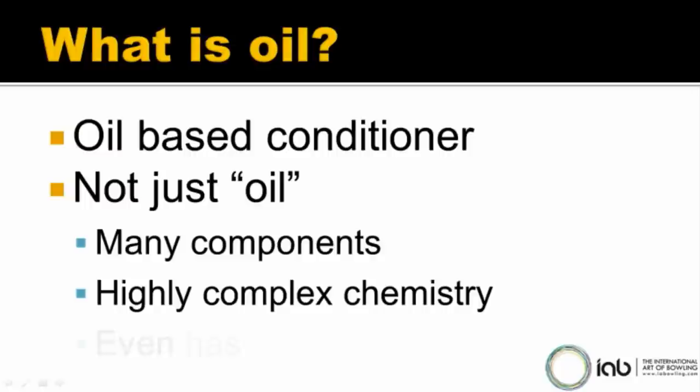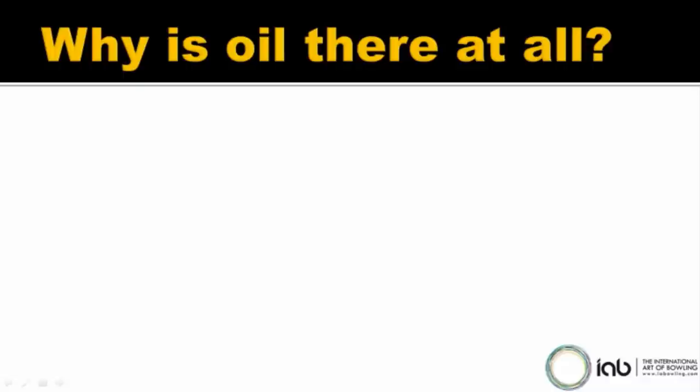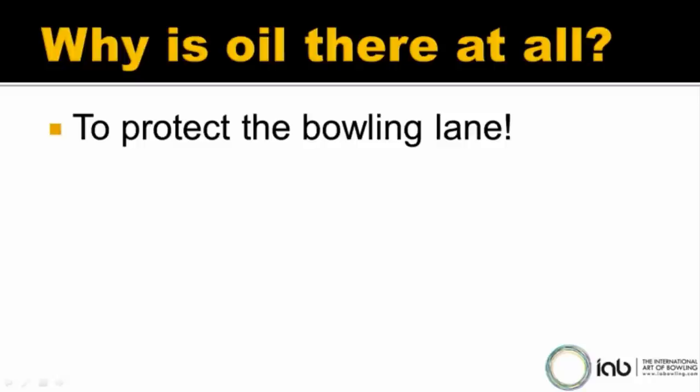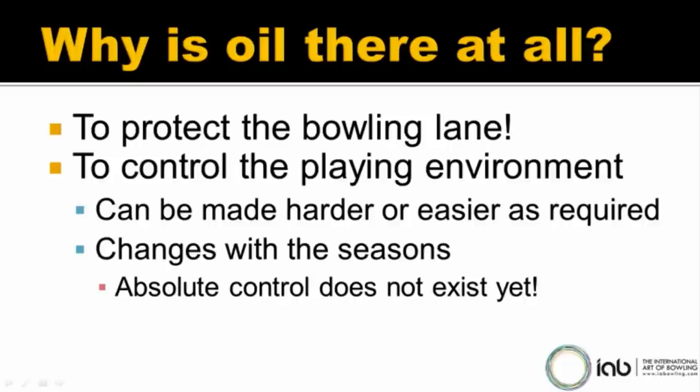Oil even has a use-by date. Why do we use oil at all? Why is it there? The first and foremost reason for oil is not — as a lot of people think — to make the lanes playable, but in fact to protect the bowling lanes. Oil is there to protect bowling lanes from bowling balls, pure and simple. But of course, it's what we use to control the playing environment on the bowling lane.